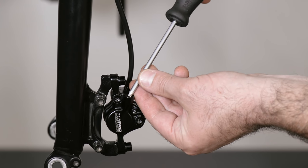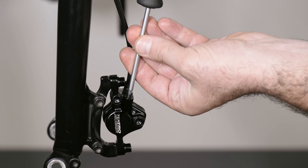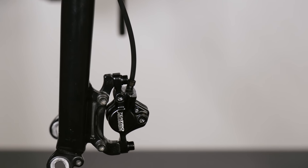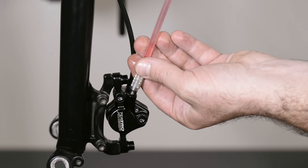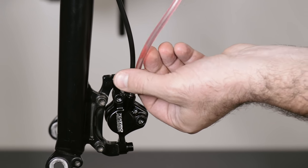Use a Torx T15 screwdriver to remove the bleed port plug from the caliper. Then attach a syringe and hose filled with Tektro Mineral Oil using the fitting found in the advanced bleed kit.